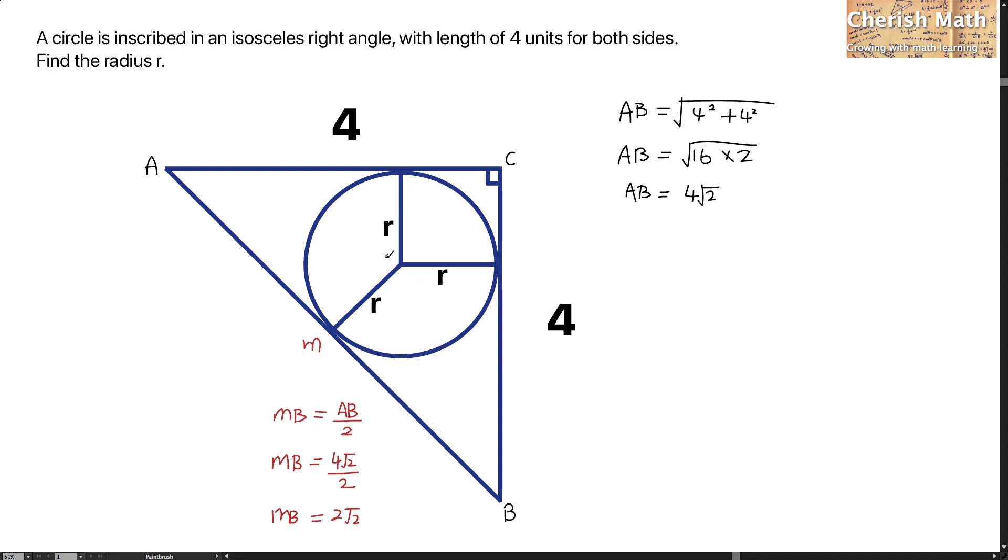Now, let's label O as the center of the circle, and N is the point of tangent between the circle and line BC. The distance CN is R, and the distance NB is 4 minus R.